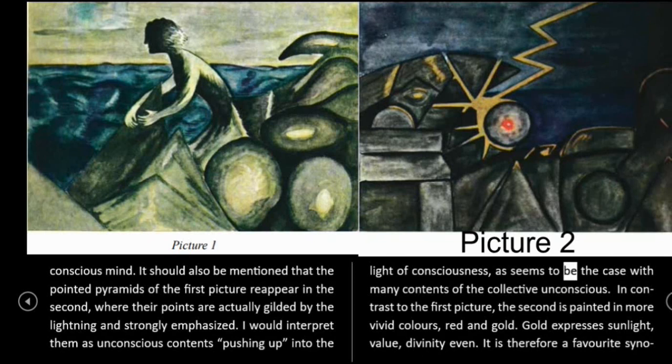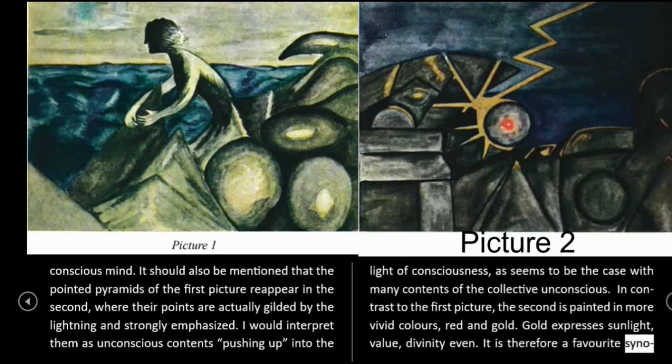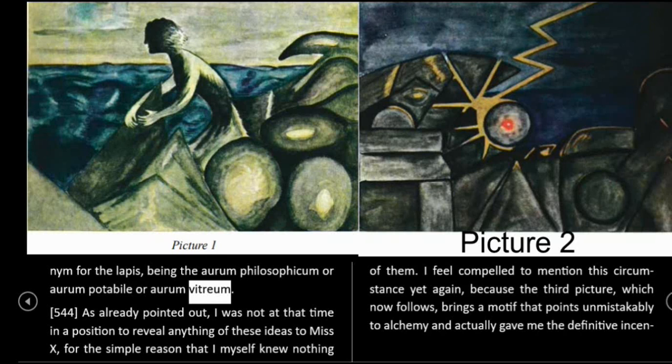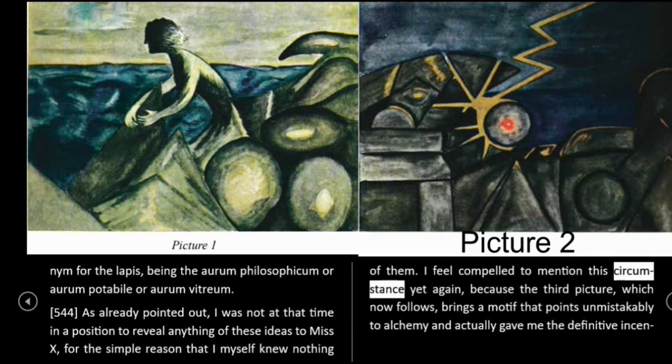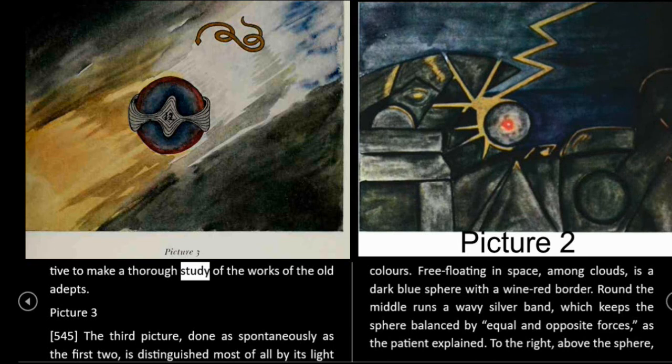It is probably for this reason that the second picture has the decidedly nocturnal character intended by the unconscious and asserted against the wishes of the conscious mind. It should also be mentioned that the pointed pyramids of the first picture reappear in the second, where their points are actually gilded by the lightning and strongly emphasized. I would interpret them as unconscious contents pushing up into the light of consciousness, as seems to be the case with many contents of the collective unconscious. In contrast to the first picture, the second is painted in more vivid colors — red and gold. Gold expresses sunlight, value, divinity even. It is therefore a favorite synonym for the lapis, being the aurum philosophicum or aurum potabile or aurum vitreum. 544: I was not at that time in a position to reveal anything of these ideas to Miss X, for the simple reason that I myself knew nothing of them. The third picture, which now follows, brings a motif that points unmistakably to alchemy and actually gave me the definitive incentive to make a thorough study of the works of the old adepts.